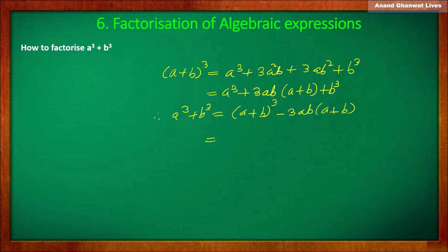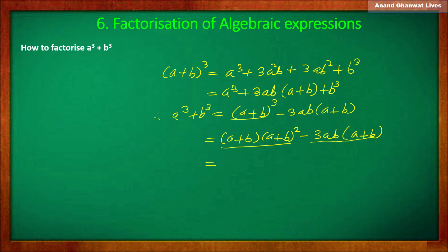Now (a plus b) cubed equals (a plus b) into the square of (a plus b). And minus 3ab into bracket (a plus b) is another term. The common factor between the two terms is (a plus b). So taking (a plus b) outside: (a plus b) into bracket square of (a plus b) minus 3ab.